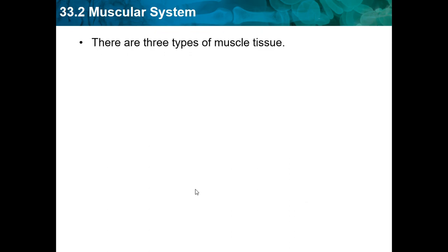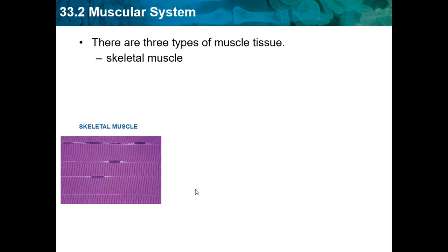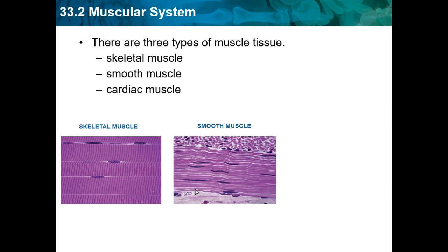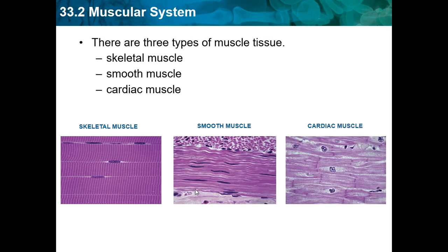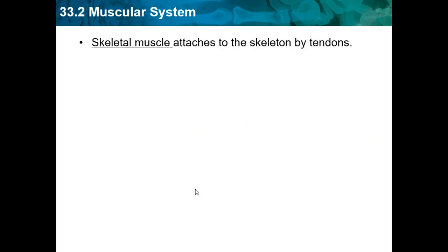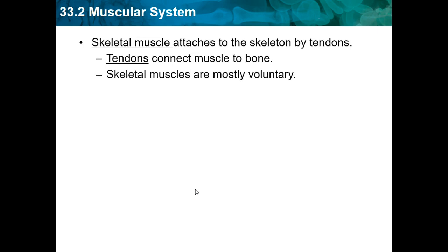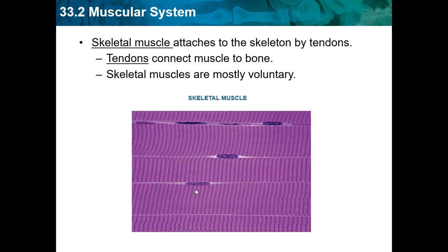There are three types of muscle tissues: skeletal muscle, smooth muscle, and cardiac muscle. Skeletal muscle attaches to the skeleton by tendons — tendons attach muscle to bones. Skeletal muscles are mostly voluntary, meaning you get to choose when to bend your arm or clench your fist.